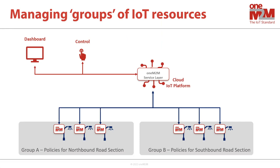Here's a simplified picture of a street lighting system. You can see how an operator monitors and controls two sets of street lights. Here we have north and southbound road sections. We could have street lights in two neighborhoods or some other arrangement. I suppose the operator could control each street light independently if they wanted to. Yes, that is correct.